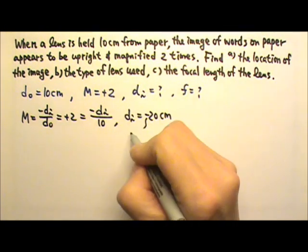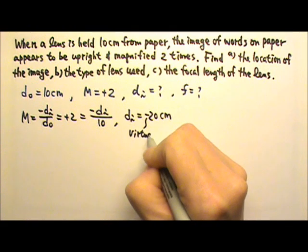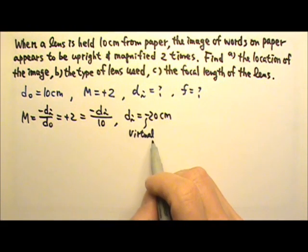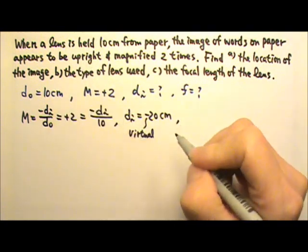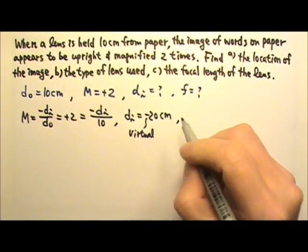This negative of course tells us this is a virtual image. Well, of course, we already know it is a virtual image because it is an upright image, so it matches that. And it is 20 cm away.